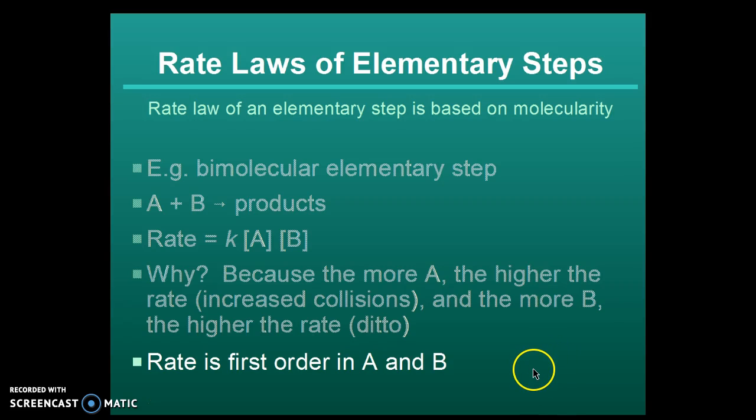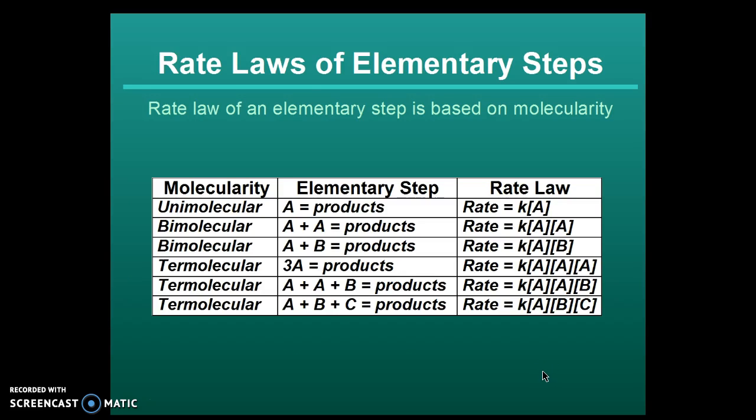Now, if A and B are the same thing, of course, you will have an order of two for the reaction. Here is a useful table showing the rate law based on molecularity. And please remember, termolecular is very, very rare. A bimolecular can either be two things that are the same or two reactants that are different.